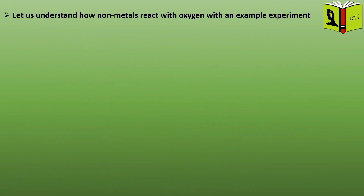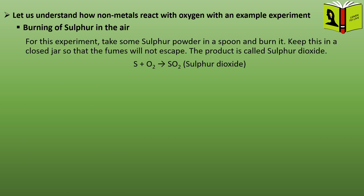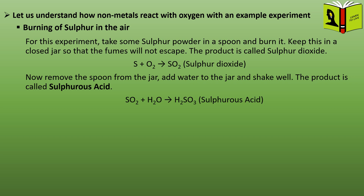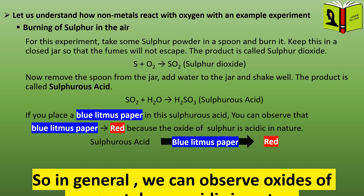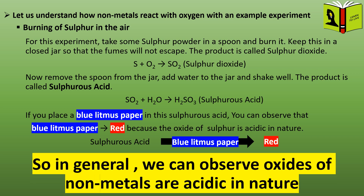Now let us understand how non-metals react with oxygen, with an example experiment — burning of sulfur in air. For this experiment, take some sulfur powder in a spoon and burn it. Keep this in a closed jar so that the fumes will not escape. The product is called sulfur dioxide. Now remove the spoon from the jar, add water to the jar and shake well. The product is called sulfurous acid. If you place a blue litmus paper in the sulfurous acid, you can observe that the blue litmus paper turns red, because the oxide of sulfur is acidic in nature. So in general, oxides of non-metals are acidic in nature.